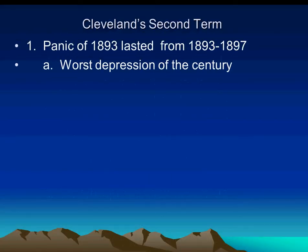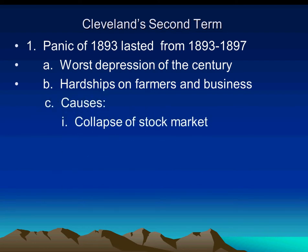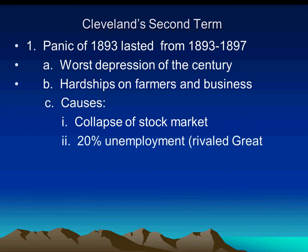The Panic of 1893 lasted for most of Cleveland's term in office. In fact, it extended beyond his term. It was one of the worst depressions that ever hit America. It created a lot of hardships on businesses and farmers. The stock market collapsed, and 20% of the people were unemployed.